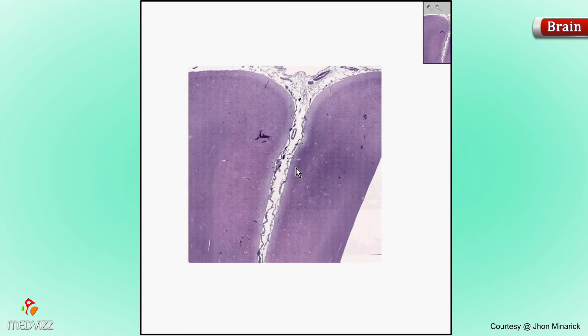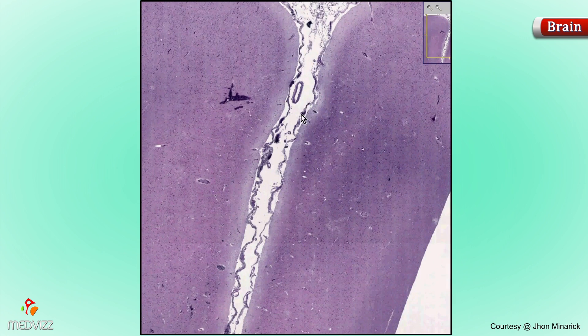Please do not freak out over the central nervous system. Whereas it is without a doubt the most complex system of the entire body, histologically it's really one of the easiest, as long as you don't have to figure out where all those little fibers are going. If you just look at it from a tissue point of view, it's a joy and it's easy.